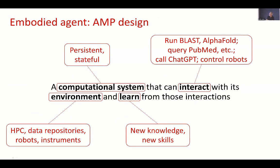In this example, what we've got is our embodied agent — maybe some human bits in there still — running different components of designing a peptide and choosing an experiment to run. It's running a whole variety of simulations, querying databases, controlling robots, and at least developing new knowledge — maybe not yet at the point of learning new skills. It's working in an environment that includes HPC, data repositories, robots, and instruments.